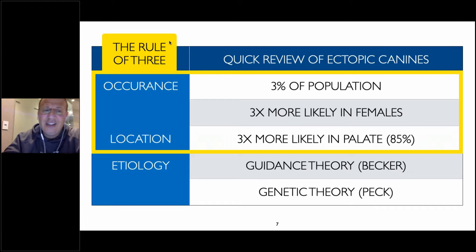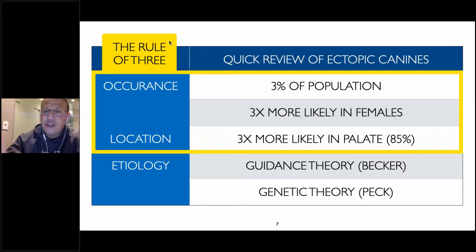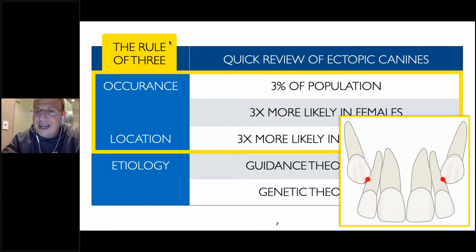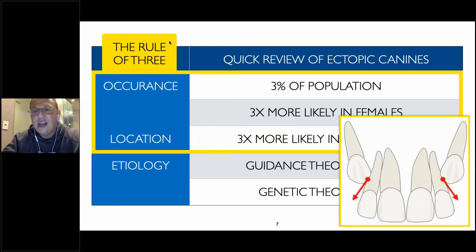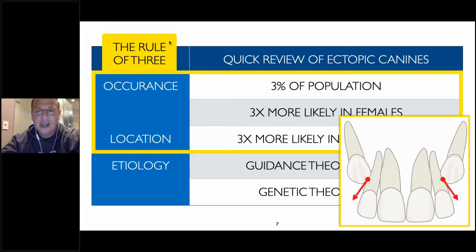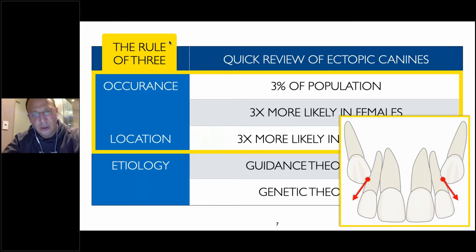There are two etiologies for ectopic canines that you need to know. The two etiologies are the guidance theory promoted by Becker and the genetic theory promoted by Peck. The guidance theory says we need the distal slope of that lateral incisor for the canine to come in correctly. Remember the broad vent phenomenon of the ugly duckling stage — that mesioangular canine hits the distal root of the lateral incisor, which causes the root to go mesial, which causes the central root to go mesial, which causes that ugly duckling diastema. As the canine guides down the distal aspect of the lateral incisor, that diastema will close somewhat in the self-correction of that broad vent phenomenon.